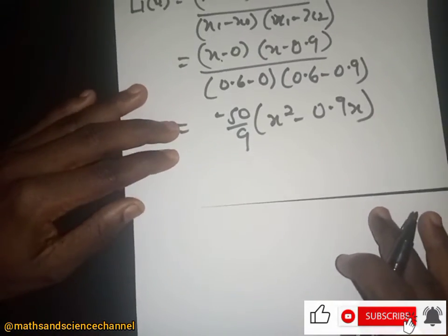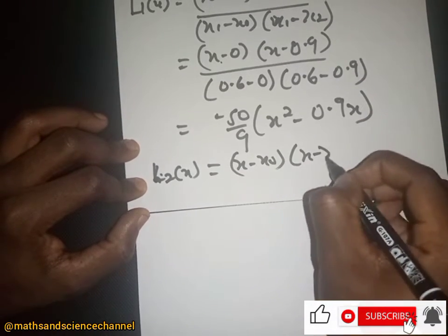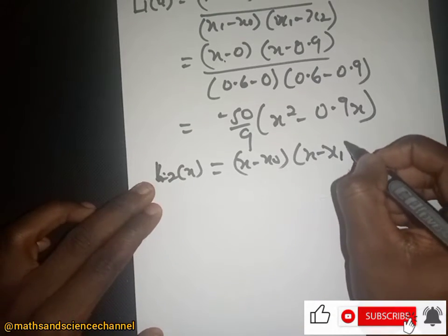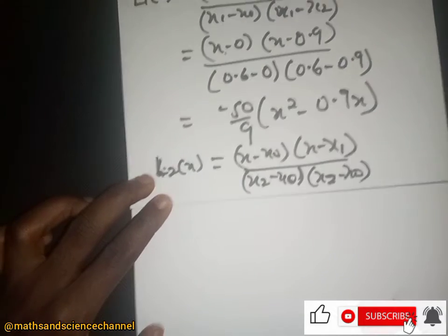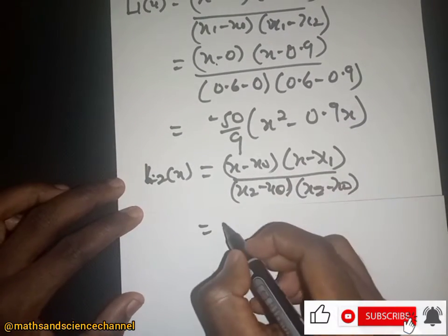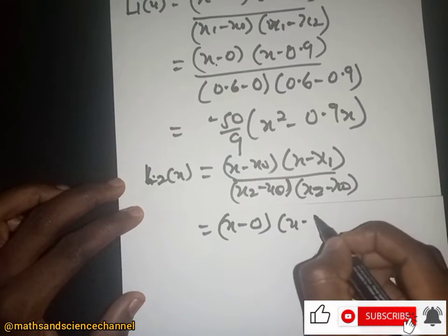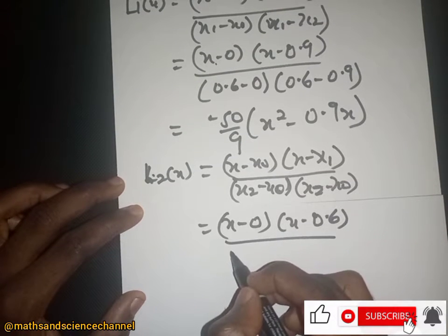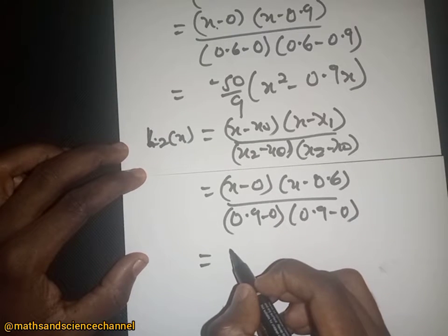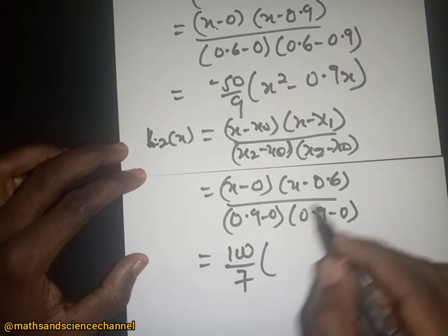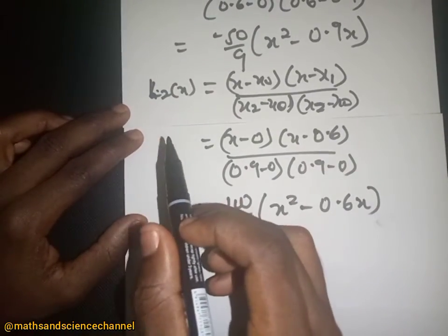For L₂(x), the formula is: L₂(x) = (x − s₀)(x − x₁) / [(s₂ − s₀)(s₂ − s₁)]. Substituting s₀ = 0, s₁ = 0.6, s₂ = 0.9: numerator is (x − 0)(x − 0.6), denominator is (0.9 − 0)(0.9 − 0.6). This gives a coefficient of 100/27, and expanding the numerator gives x² − 0.6x.